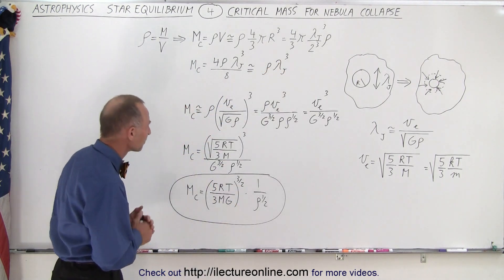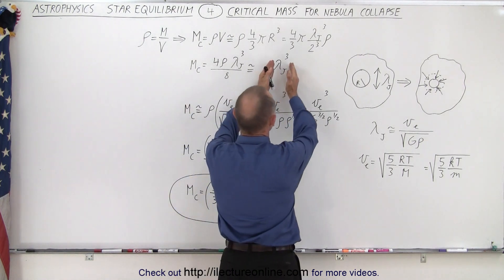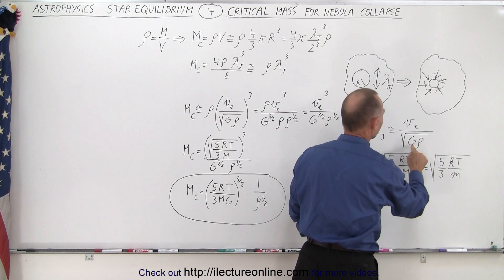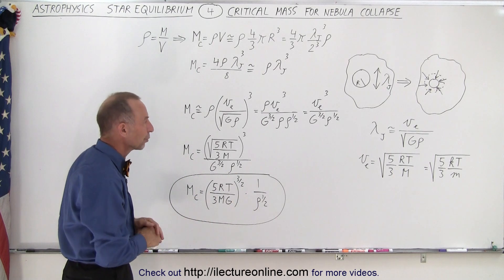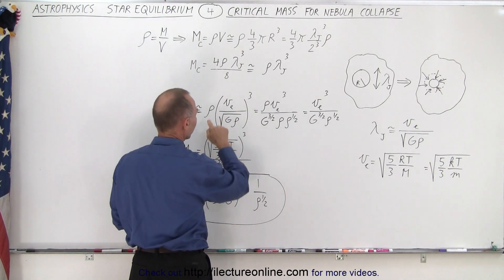I keep wanting to say mass instead of length. All right. So then we replace what Jeans length is equal to in terms of the escape velocity divided by the square root of the gravitational constant times the density. Remember we calculated that in the previous video. So if we then replace Jeans length by that, we get the following.